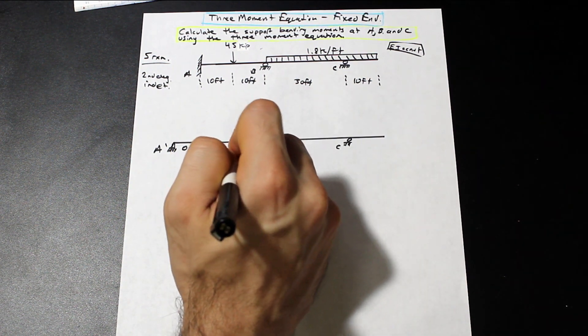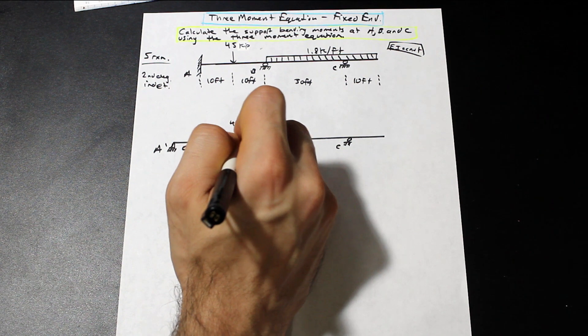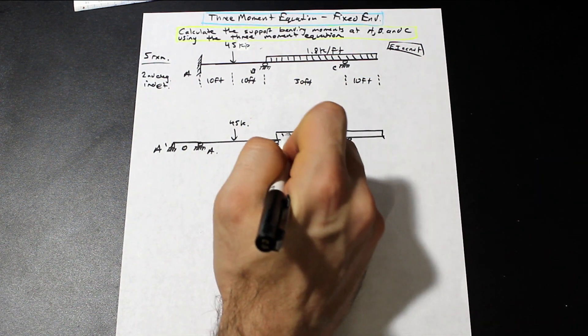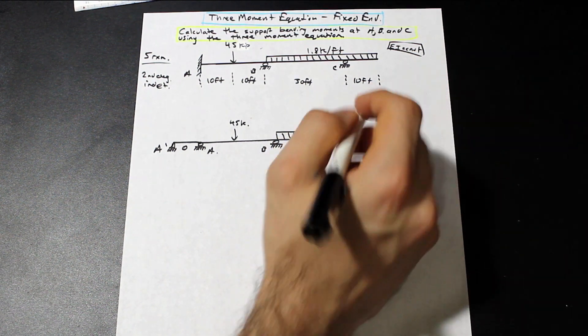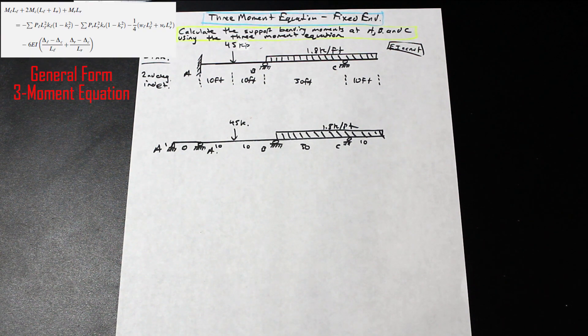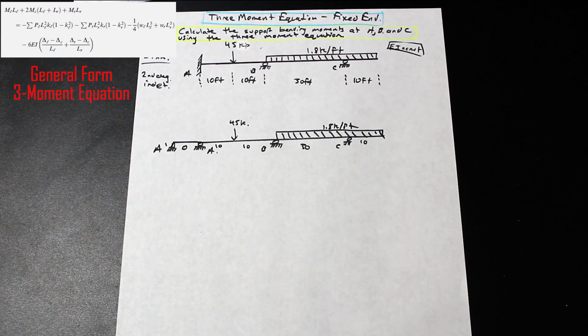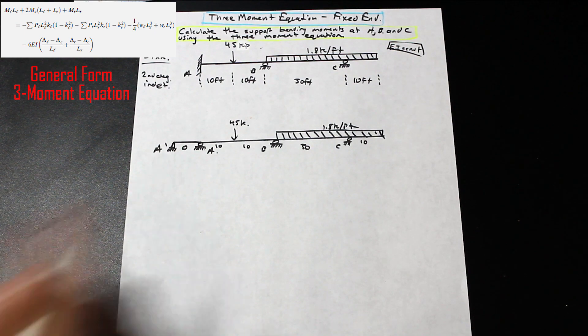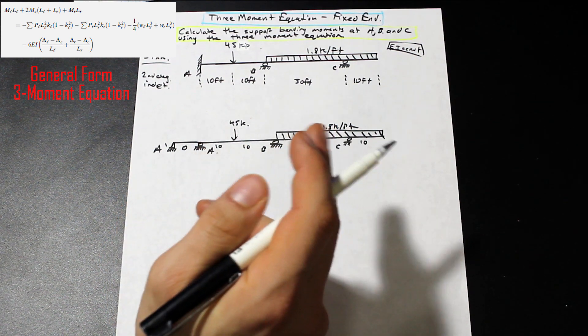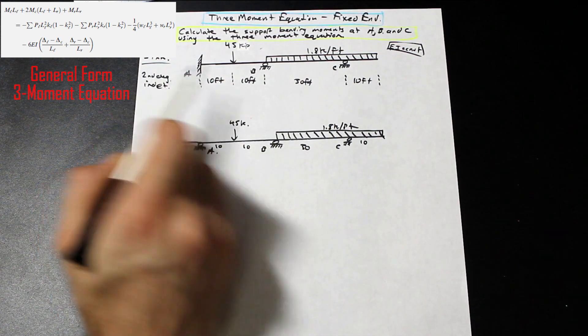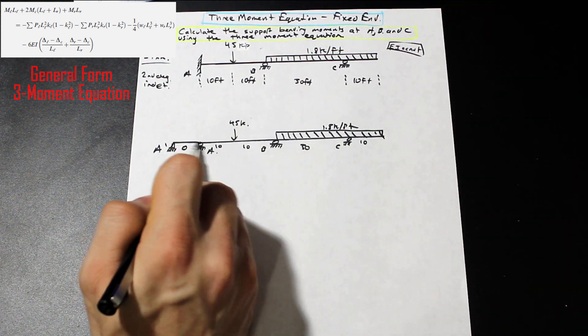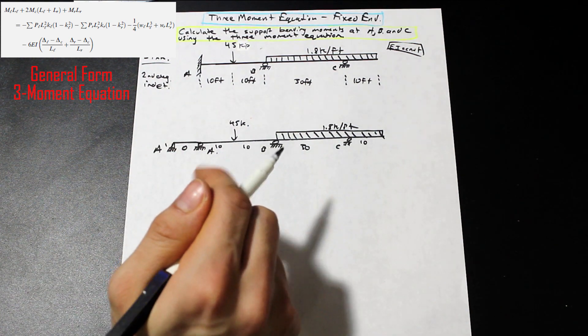And then the rest of the beam looks the same. So we still have that roller at B, and we still have the roller at C. So in between A and B, we have this 45 kip force. We still have our 1.8 kip per foot distributed load across from B to the end there. What our next step is, is essentially to assign our redundants and we're going to go ahead and plug into our three-moment equations.